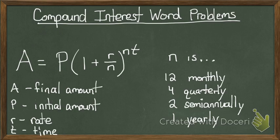Welcome back! Let me explain the formula real quick. A is your final amount, P is your initial amount, whatever you start off with, R is your rate and you're going to change to a decimal, and T represents your time.